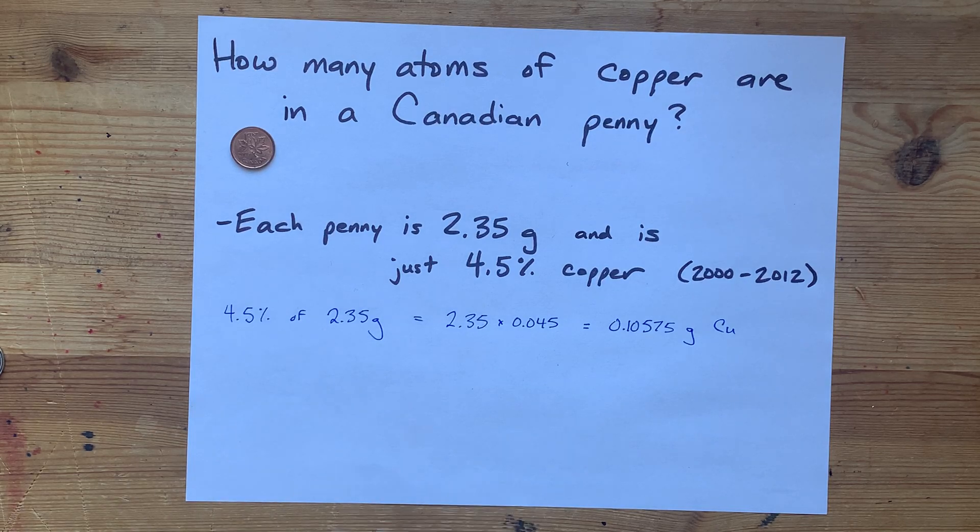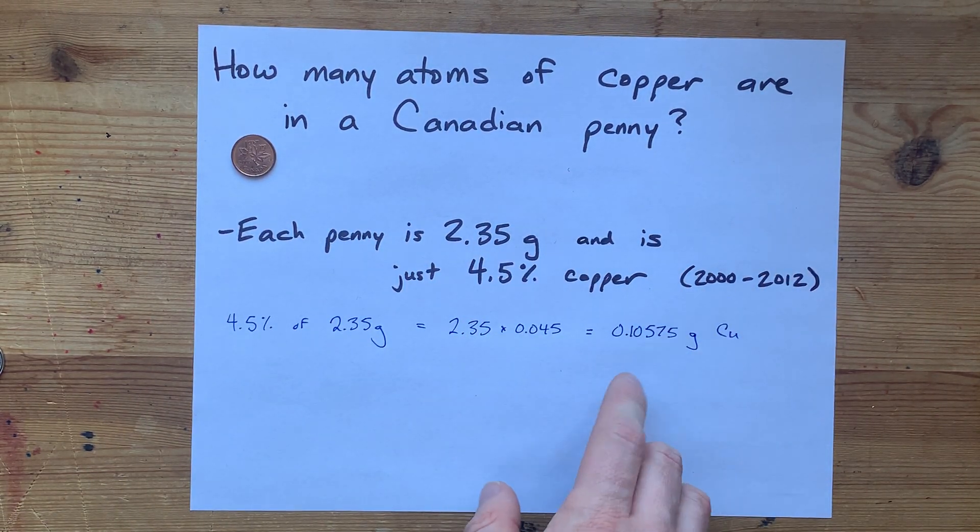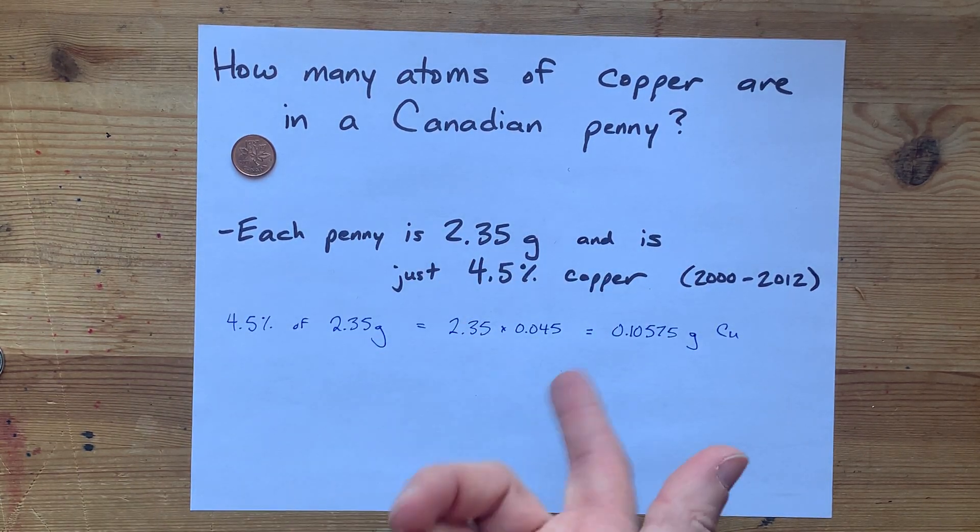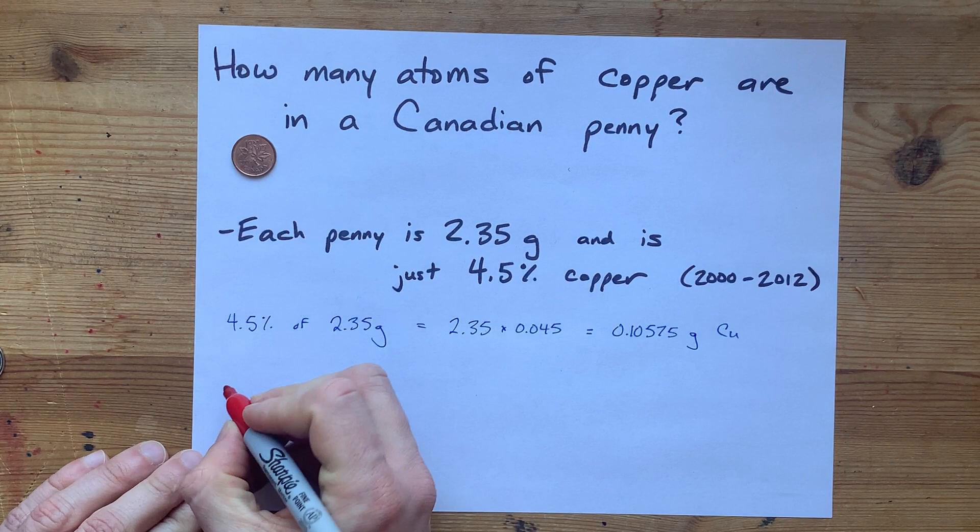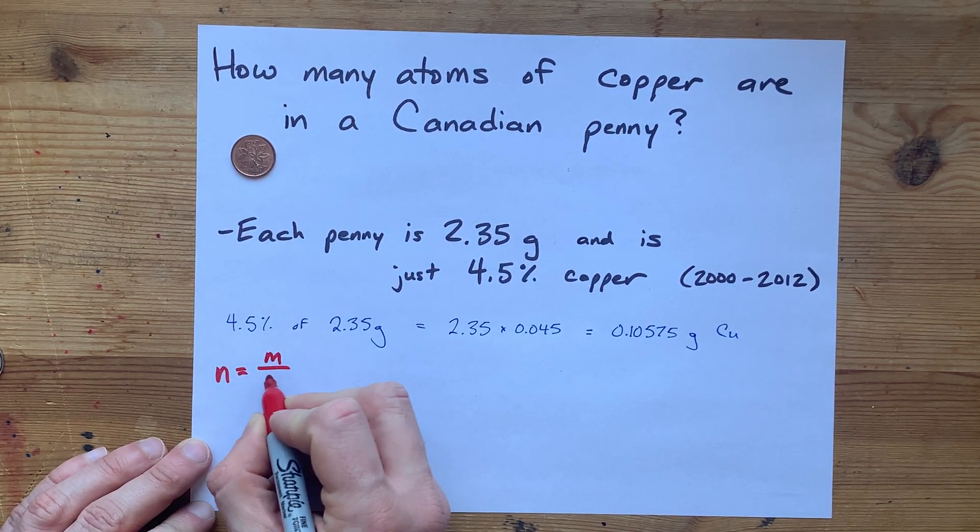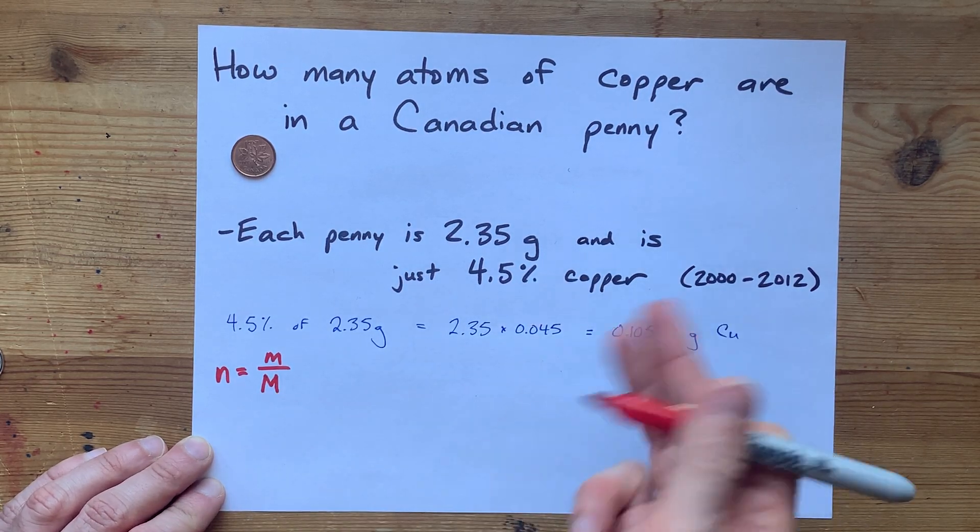2.35 times 4.5% gives me just 0.10575 grams of actual copper. Now, to convert that to atoms, I'm going to need to convert it to moles first. Always convert grams to moles. Then you can turn it into a number of particles. The number of moles is going to be the mass divided by molar mass, or in this case, atomic mass of copper.